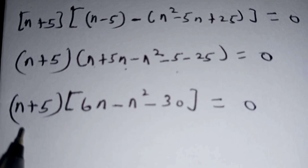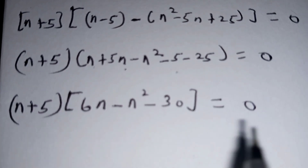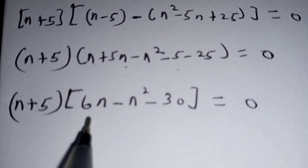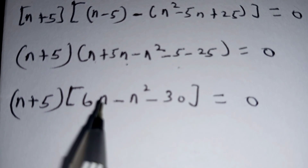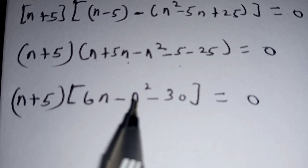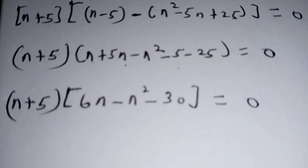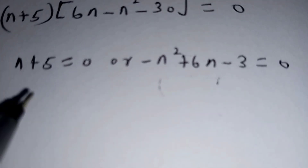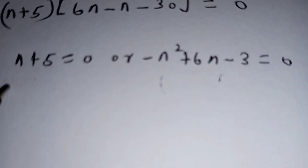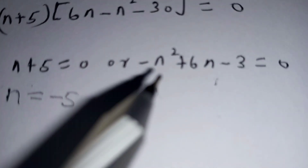This implies that n plus 5 is equal to 0, and n squared minus 6n plus 30 is equal to 0. From these two, we are going to solve for n. Our first value of n will be equal to negative 5, when we take n to the right. The other one is a quadratic equation.